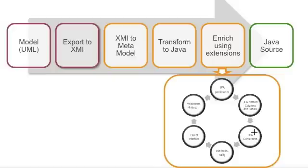For instance, if you like join tables to be named in a special way, it could be JPA constraints, it could be bidirectionality, it could be fluent interfaces, validations, history and so on. There are a lot of extensions that you can use. And then finally you will write it out as Java source code.